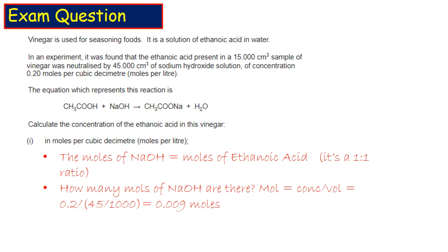Because we know the moles of sodium hydroxide is equal to the moles of ethanoic acid, we now know that we have 0.009 moles of ethanoic acid. So we can now use that to work out the concentration.